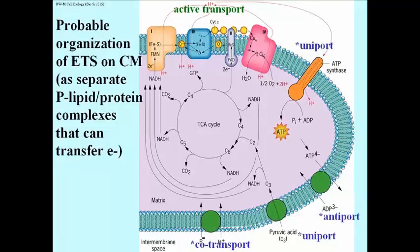And finally, in another example of uniport, protons flow back into the matrix through the F1 ATP synthase particle. Here it looks vaguely like the lollipop that we talked about earlier, to relieve the proton gradient.